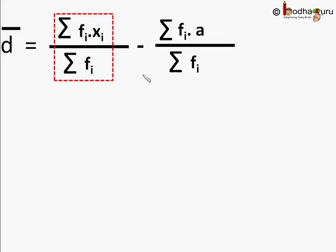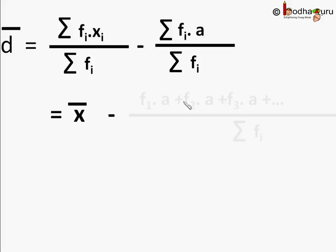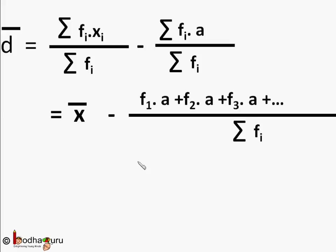So f1 x1 plus f2 x2 is same as sigma fi xi. And the right side term f1 A plus f2 A is same as A times sigma fi. And the denominator is sigma fi. Here we can write the numerator as sigma fi xi minus A times sigma fi, and the denominator is sigma fi. So the numerator and denominator sigma fi cancels, we are left with A on the right term.